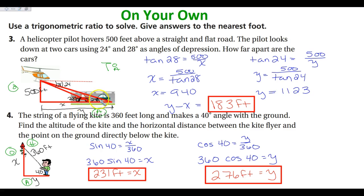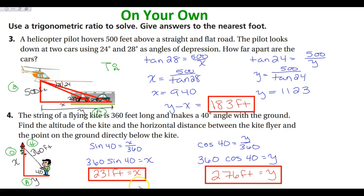After establishing that depression and elevation are congruent, we ignore the depression angles because they're outside the triangle. Opposite and adjacent gives us tangent for both triangles. For number four, we are flying a kite — the string is 360 feet long and makes a 40-degree angle with the ground. We want to find both the altitude X and the horizontal distance Y. If you have any questions, make note of that and ask me next time you see me in class. Have a wonderful day.